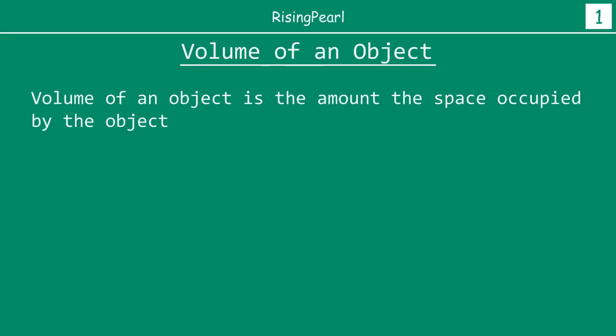Volume of any object, regardless of the shape and the dimension, is the amount of space which is occupied by the object. So that is what is meant by volume of an object. Now this is mostly true if the object is a solid object.